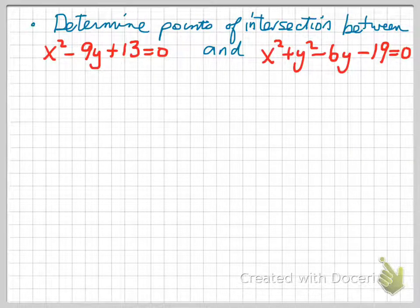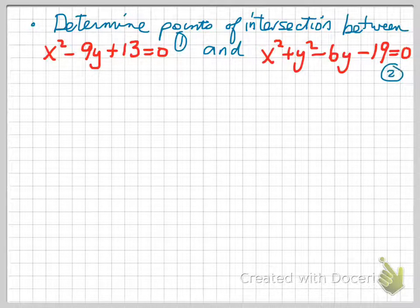Here we'd like to determine the points of intersection between these two equations. In other words, we're trying to solve a nonlinear system of equations because we can see it's nonlinear because we have squared terms. So we have x squared minus 9y plus 13 is equal to 0. We'll call that equation number 1, and we have x squared plus y squared minus 6y minus 19 is equal to 0. We'll call that equation 2.